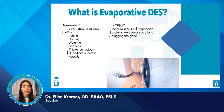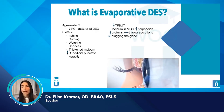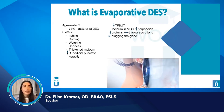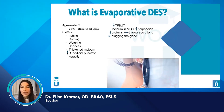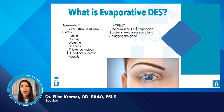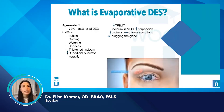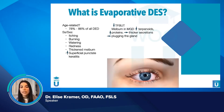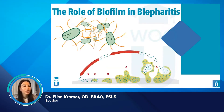Symptoms include itching, burning, watering, and redness. Signs include thickened meibum, increased SPK, and decreased tear film breakup time. When looking at meibomian gland dysfunction, we see a decrease in terpenoids, an increase in proteins, resulting in thicker secretions and plugging of the glands.